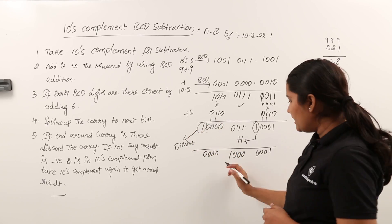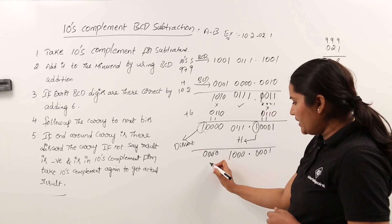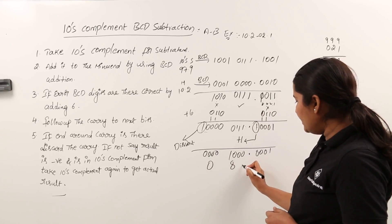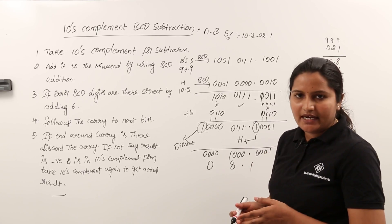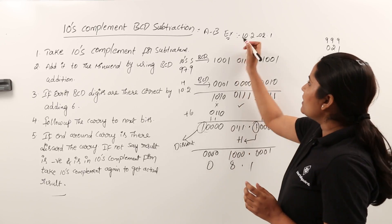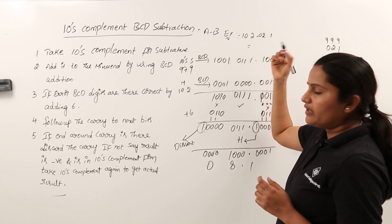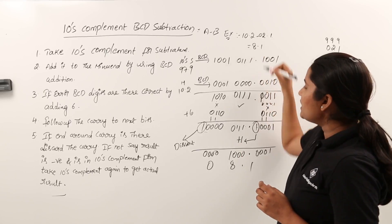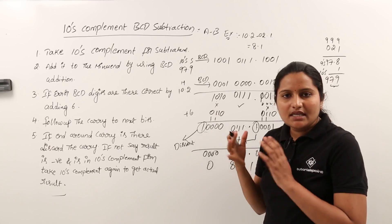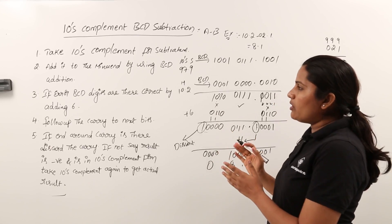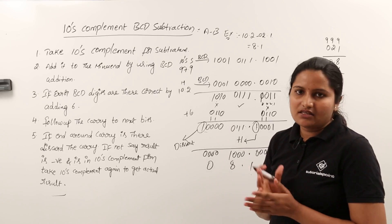We discarded the end around carry. Now decode the remaining result: 0001 → 0, 1000 → 8, 0000 → 0, 0001 → 1, giving 08.1, which means 8.1. This matches the expected answer since 10.2 minus 2.1 equals 8.1. This confirms our ten's complement BCD subtraction is correct.